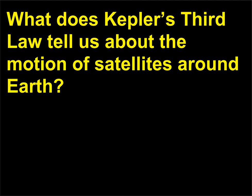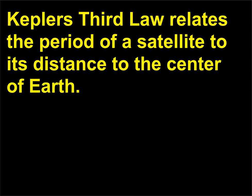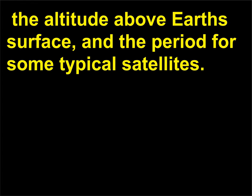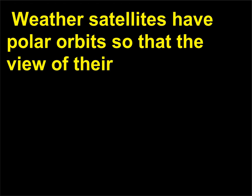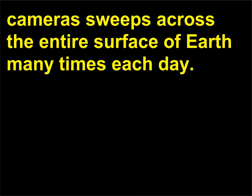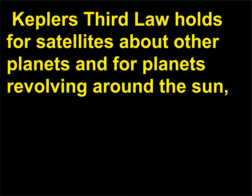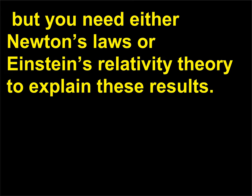What does Kepler's third law tell us about the motion of satellites around Earth? Kepler's third law relates the period of a satellite to its distance from the center of Earth. Weather satellites have polar orbits so that the view of their cameras sweeps across the entire surface of Earth many times each day. The moon's orbit is aligned with Earth's orbit around the Sun, not Earth's equator. Kepler's third law holds for satellites about other planets and for planets revolving around the Sun, but you need either Newton's laws or Einstein's relativity theory to explain these results.